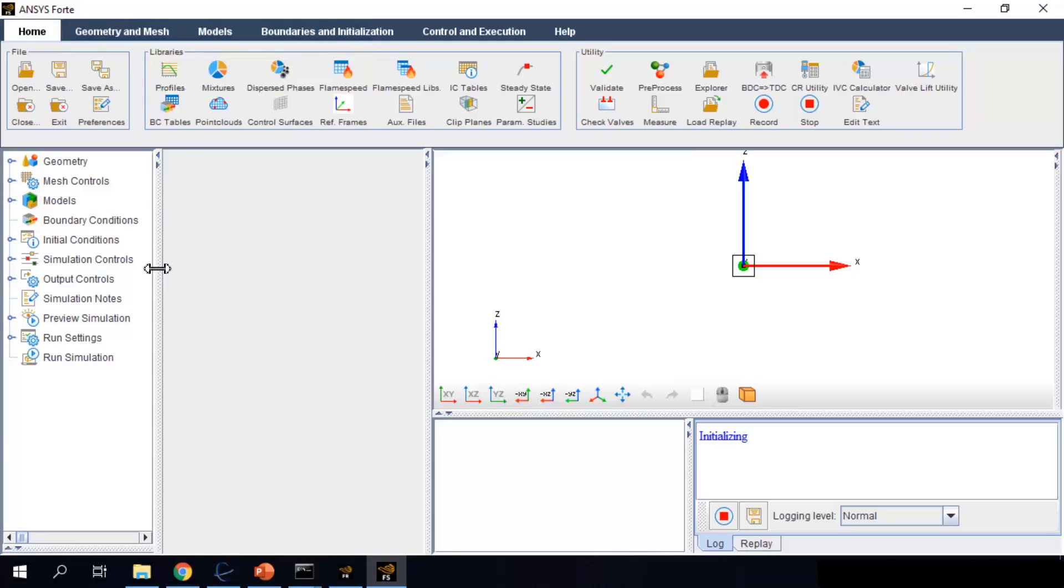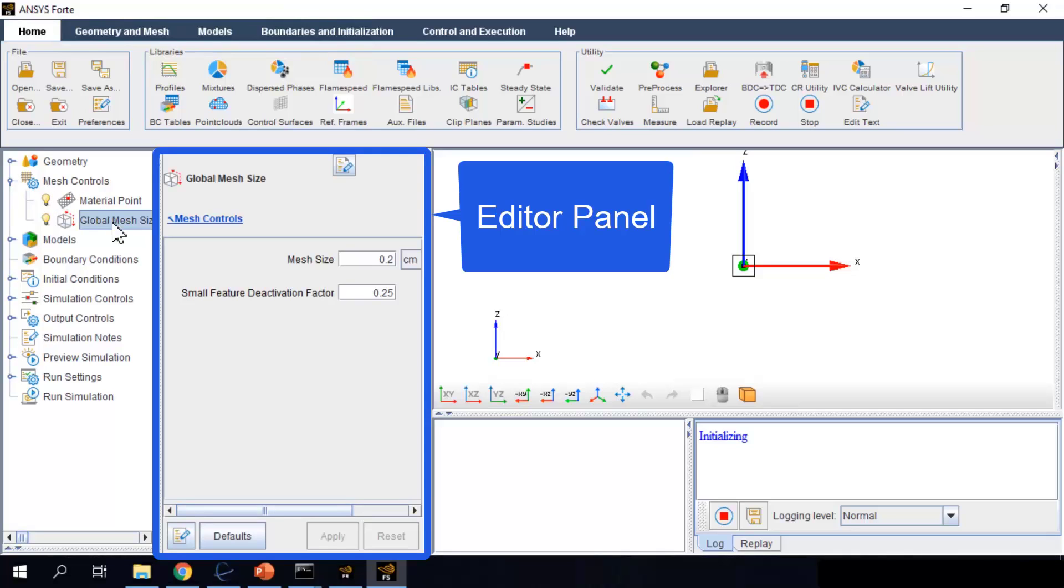Selecting an item in the workflow tree causes the corresponding editor panel to display. The editor panel reveals more specific settings.